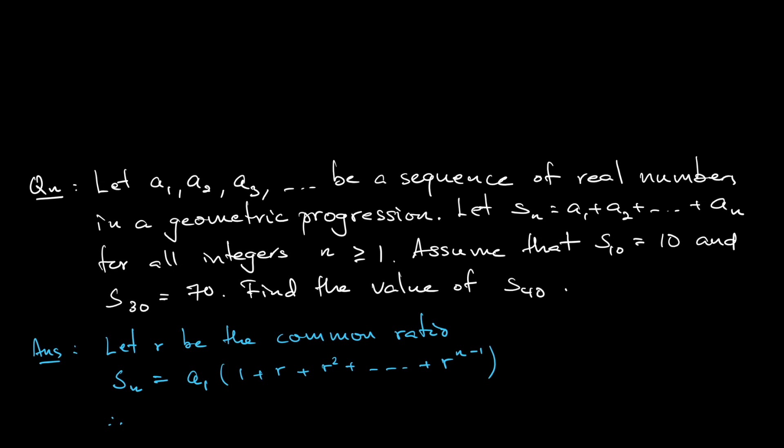So what we mean by this is, remember S10 is 10, so I can use that. S10 equals a1 times 1 plus r plus r squared all the way until r to the ninth, when n is 10, so n minus 1 is 9.